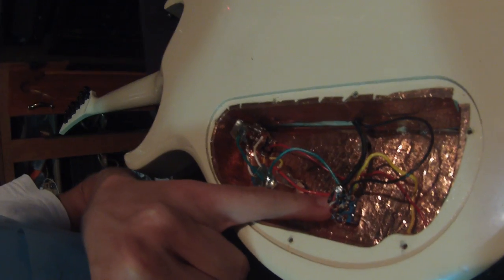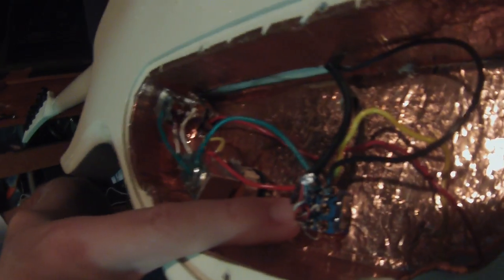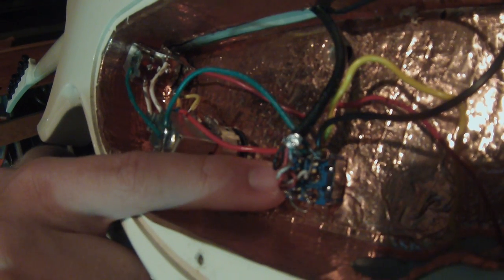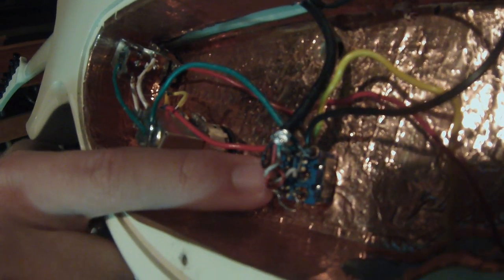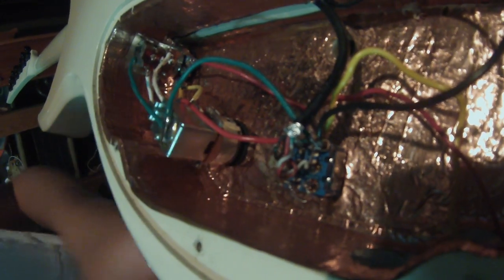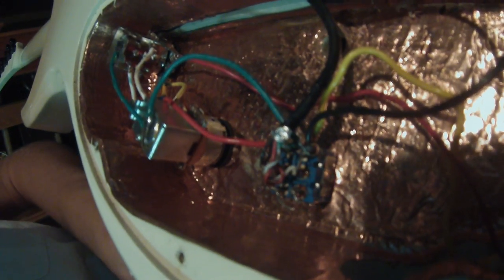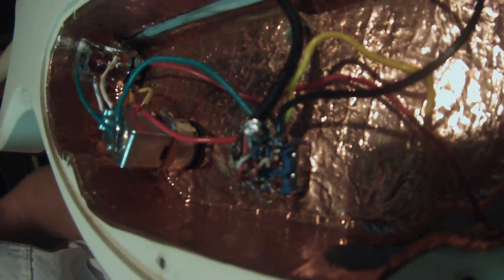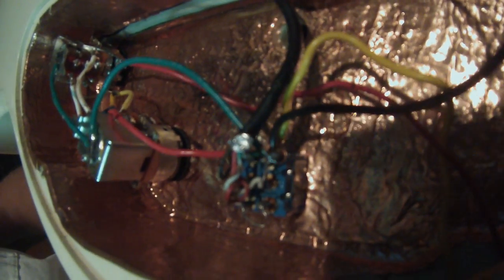But this switch right here is a DP-DT on-on-on switch. Now what that means is that every position is on for something. So that switch is going to control whether my bridge pickup is in parallel, single, just one of the coils working, or they're both running in series.